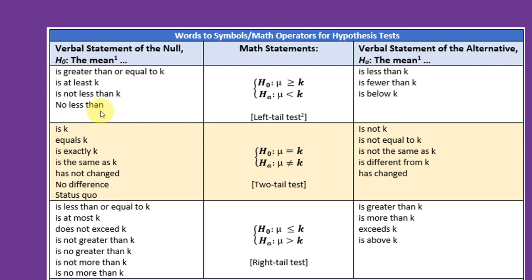All those things mean that there is a greater than or equal math operator in the claim and the claim thus has to be the null.